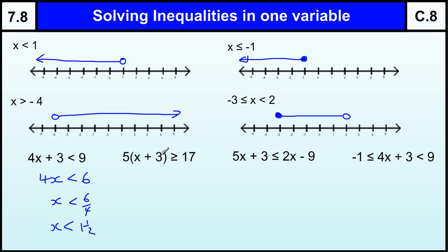Fairly straightforward. One with the bracket in, we multiply out the bracket, get 5x, multiply by 3, get 15, greater than or equal to 17, take away the 15, so 5x is greater than or equal to 2, so x is greater than or equal to 2 fifths, or 0.4.